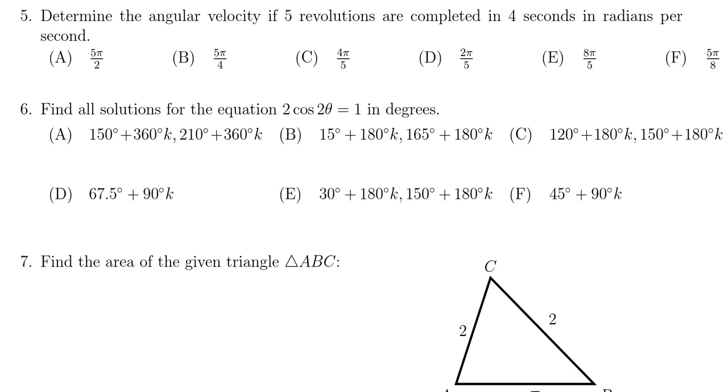In this video, we provide the solution to question number five from the practice final exam for Math 1060. We're asked to determine the angular velocity if five revolutions are completed every four seconds, but we have to convert that into radians per second. So there's some conversion going on there.